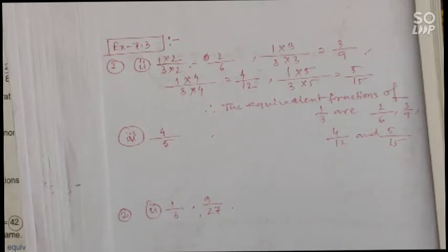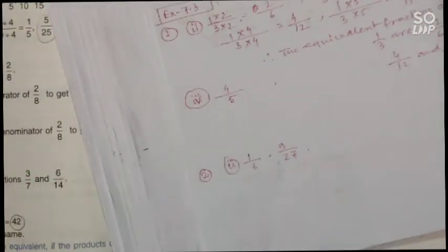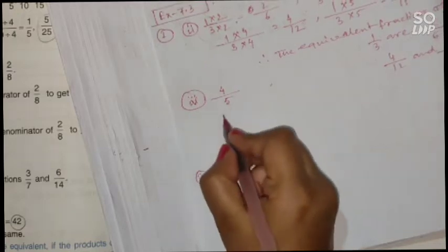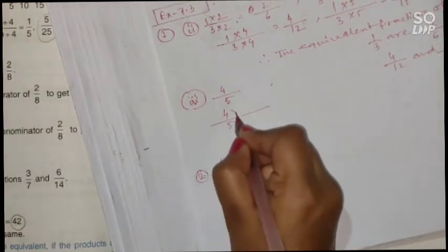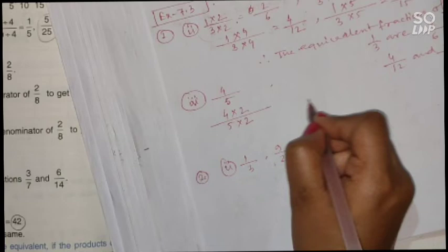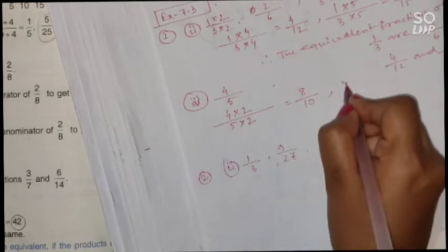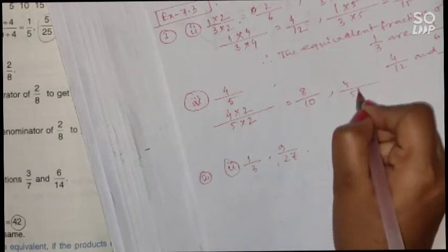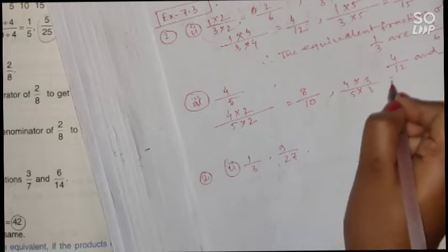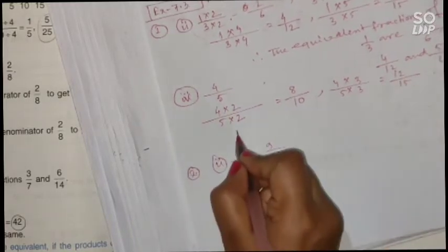Next, question number 1, part 4: find the equivalent fractions of 4 by 5. Multiply numerator and denominator by 2: 4 times 2 is 8, 5 times 2 is 10 — giving 8 by 10. Then multiply by 3: 4 times 3 is 12, 5 times 3 is 15 — giving 12 by 15.